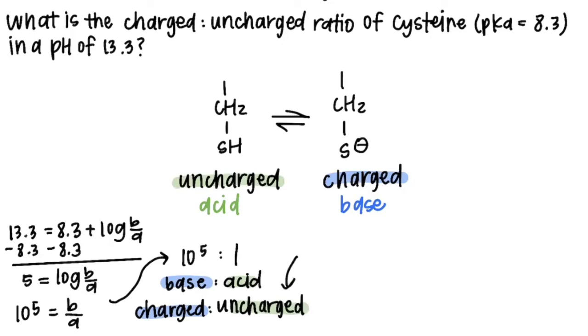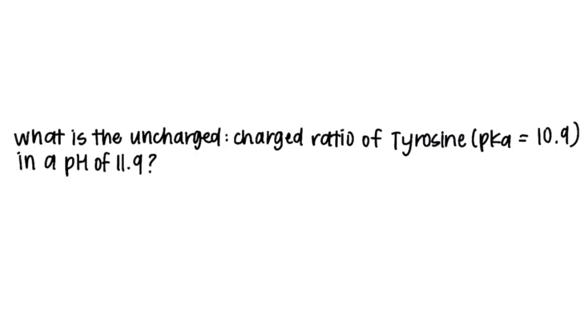So now take a look at this ratio and see if it matches the ratio that the problem asked for. And it does in this case. So we don't flip it. We leave it alone. And this is our answer. So the final problem I'm going to leave you with is calculating the uncharged to charge ratio of tyrosine in a pH of 11.9.